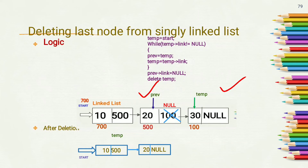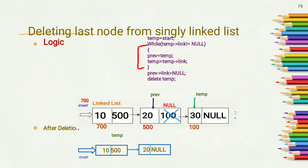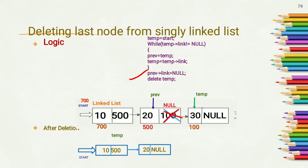Again we check whether temp->link is not equal to null, but the condition is false now because temp->link contains null. So the loop stops. Now we change the link part of previous to null: previous->link = null. Previous will become the last node of the singly linked list. Then we delete the temporary node by writing delete temp.